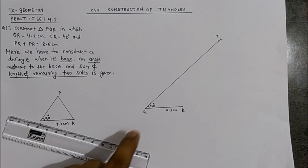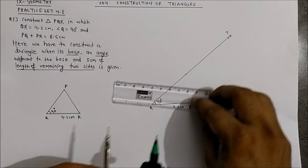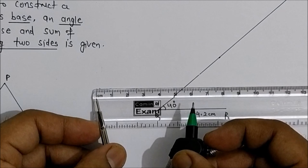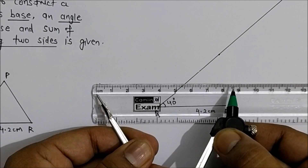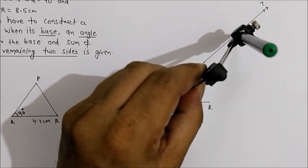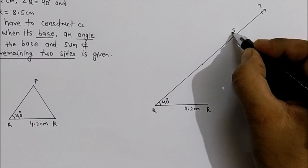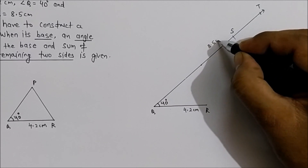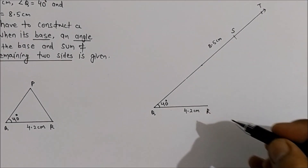The sum of the two sides is given as 8.5 cm. From point Q we have to cut an arc of 8.5 cm. Take the distance of 8.5 cm, cut the arc from point Q — this point is marked as S, and this distance QS = 8.5 cm. Now join S to R.